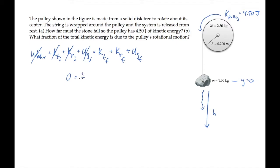The final translational kinetic energy is due to the stone's motion, so that's one half little m v squared, where v is how fast it's moving. The final rotational kinetic energy is one half I omega squared, due to the pulley's rotation. And the final gravitational potential is minus mgh, minus because the stone ends up below the y equals zero mark.